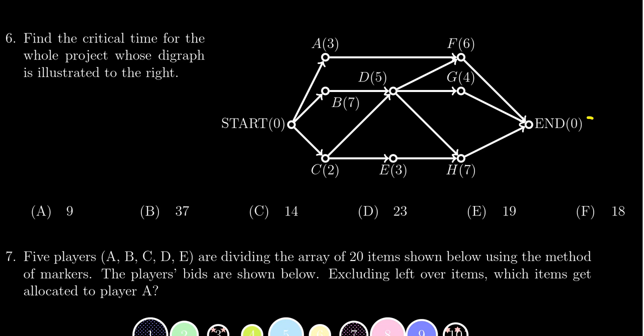We're going to calculate the critical times of each of these nodes starting at the end. We're going to backflow here. The end costs nothing, this one's going to cost six, this one will cost four, this one will cost seven.